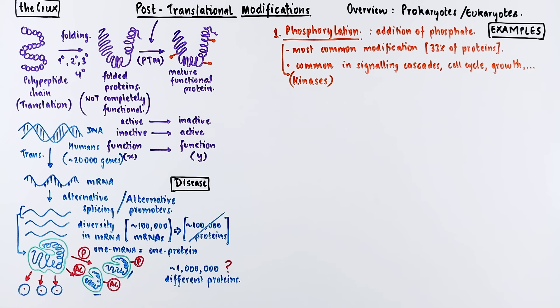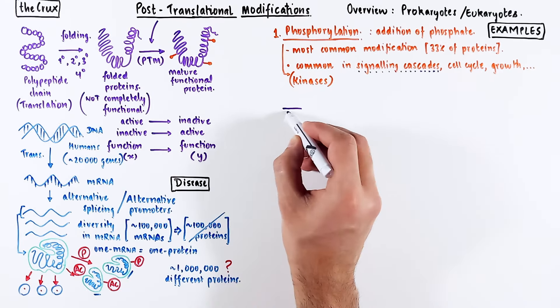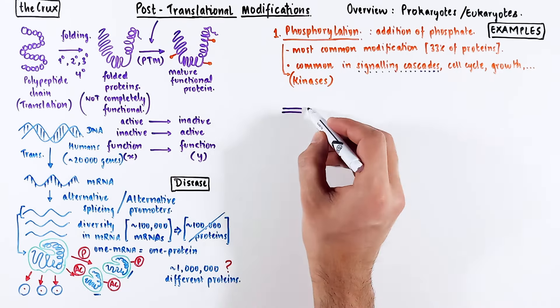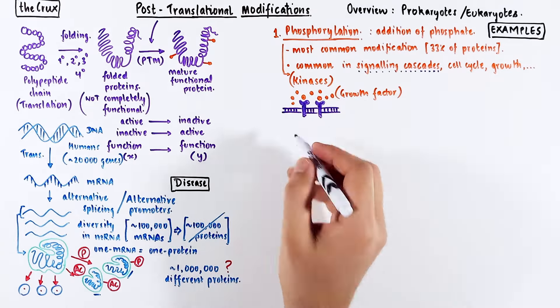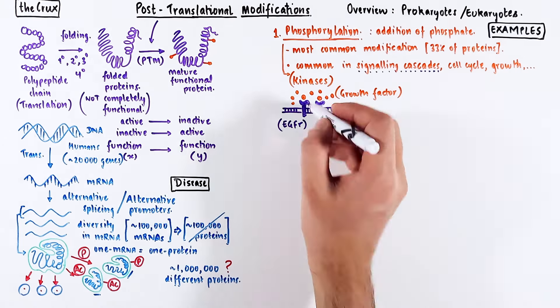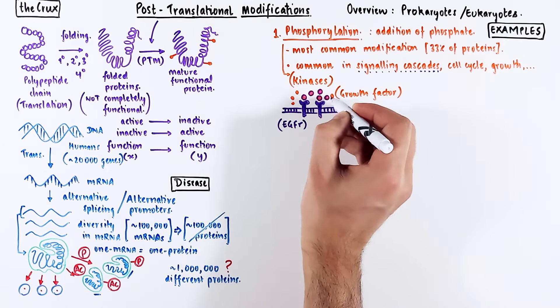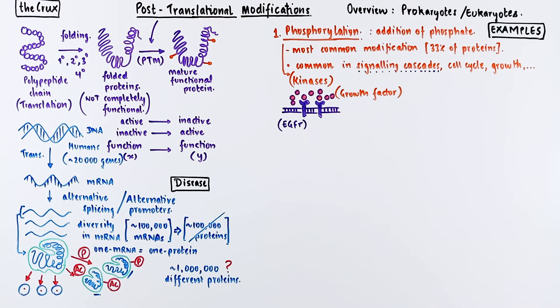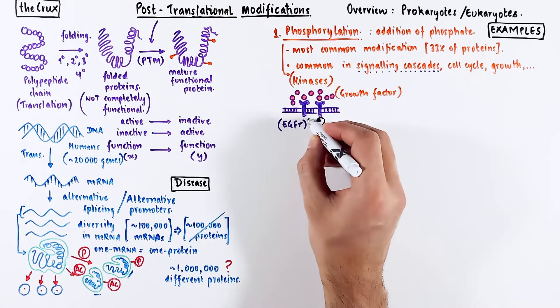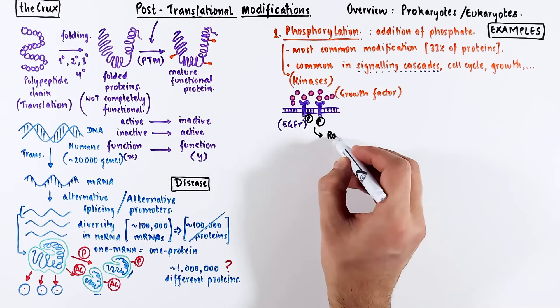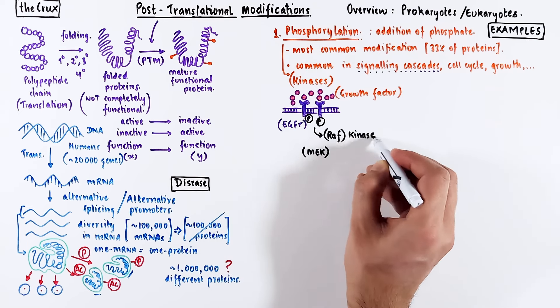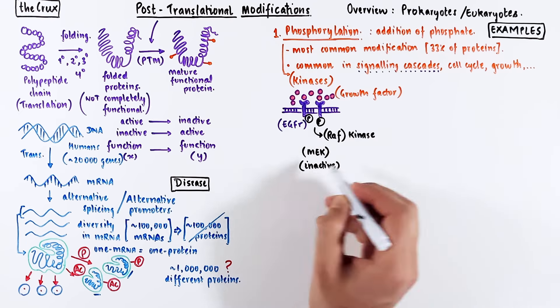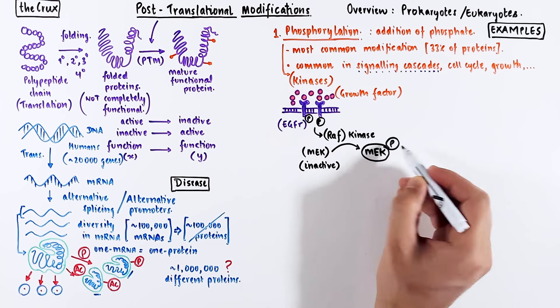Let's look at an example of a signaling cascade. Say you have a receptor on the cell membrane that receives a signal in the form of a growth factor or hormone. Let's assume this receptor is an epidermal growth factor receptor. When this factor binds the receptor, the receptors get phosphorylated and activate an enzyme called RAF, which is a kinase. This enzyme takes its substrate protein MEK, which is typically inactive, adds a phosphate to it, and makes it active.